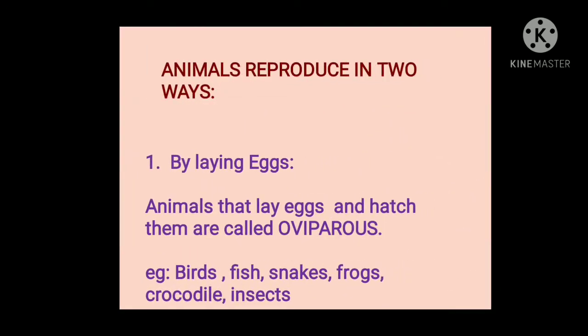Children, animals reproduce in two ways. First, by laying eggs. Animals that lay eggs and hatch them are called oviparous. Oviparous is a word derived from two different words: ovi, from the word ovum, which means egg, and parous, which means hatching. Examples of oviparous animals are birds, fish, snakes, frogs, crocodile, and insects.